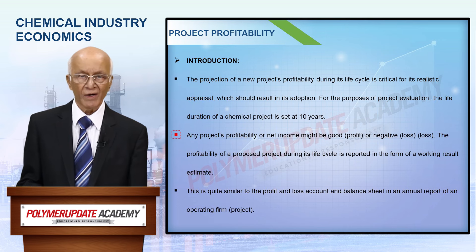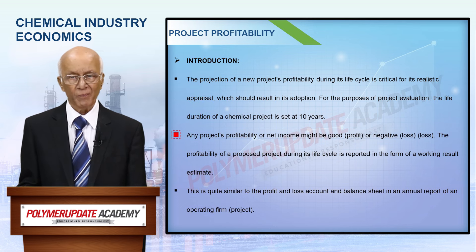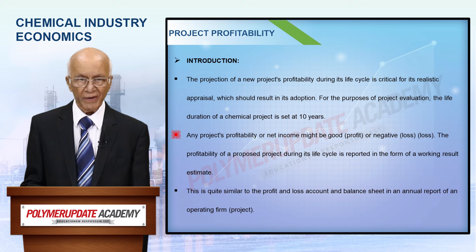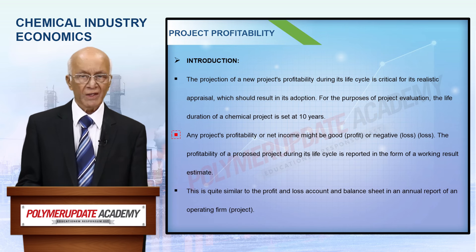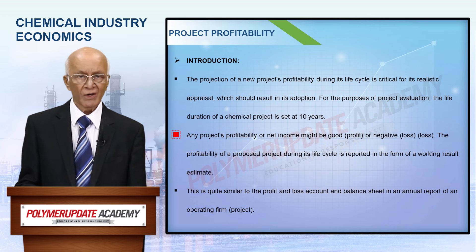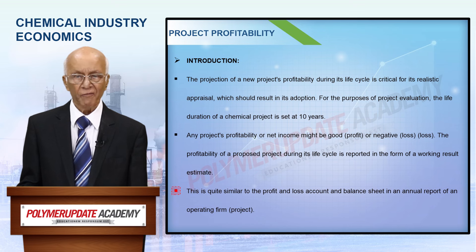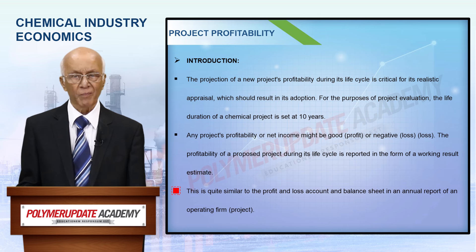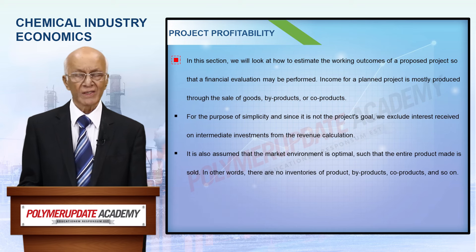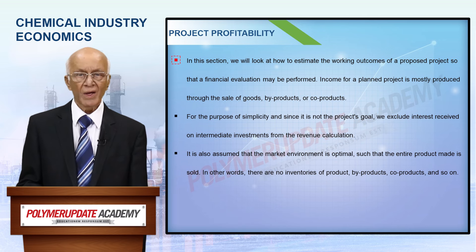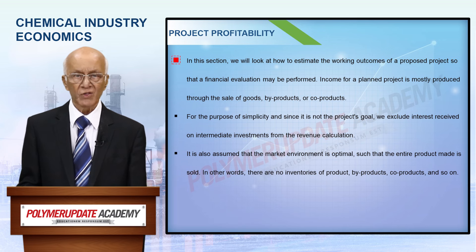The profitability or net income arising out of any project could be positive, that is profit, or negative, that is loss. The profitability of a proposed project over its lifetime is presented in the form of an estimate of working results. This is very much similar to a profit and loss account accompanied by a balance sheet in an annual report of an ongoing business. Here we shall consider how to estimate the working results of a proposed project under review so that its financial evaluation becomes possible.